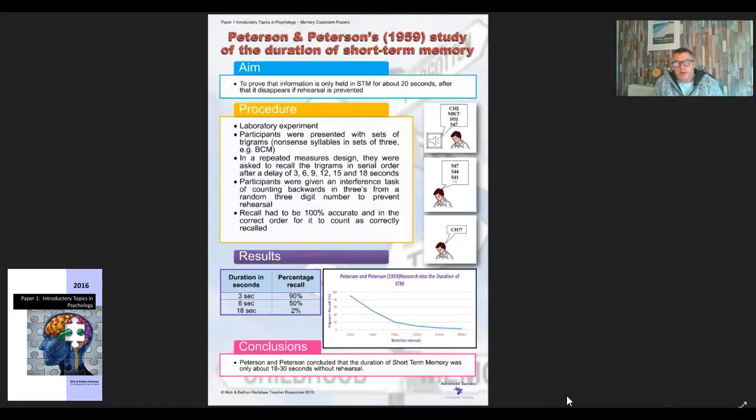Peterson and Peterson's 1959 study of the duration of short-term memory. The aim: Peterson and Peterson's aim was to prove that information is only held in short-term memory for about 20 seconds. After that, it disappears if rehearsal is prevented.